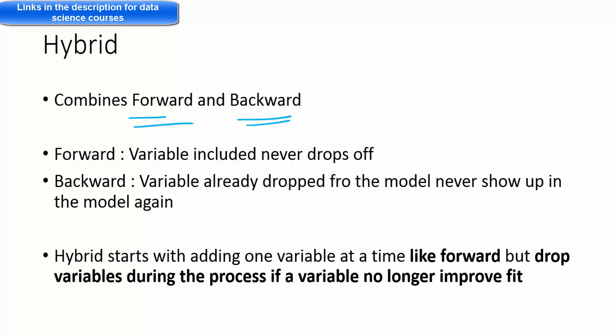The hybrid method combines features from both forward and backward selection. In forward selection, a variable which is included never drops off. In backward selection, a variable already dropped from the model never shows up in the model again.